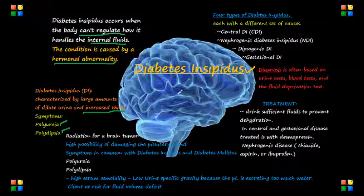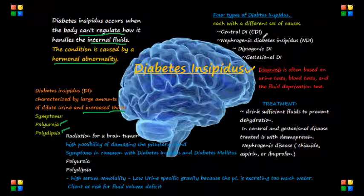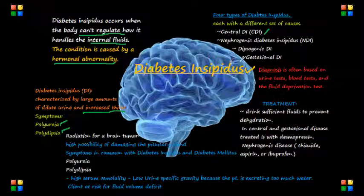There are four types of diabetes insipidus, each with its own set of causes. The first is central DI, which is usually caused by insufficient vasopressin — an antidiuretic hormone.